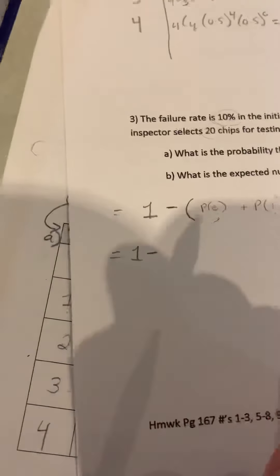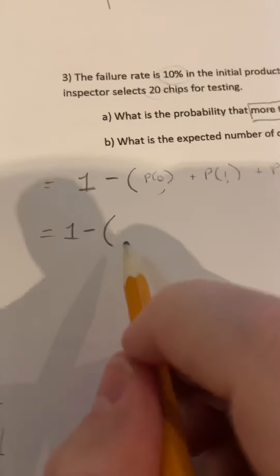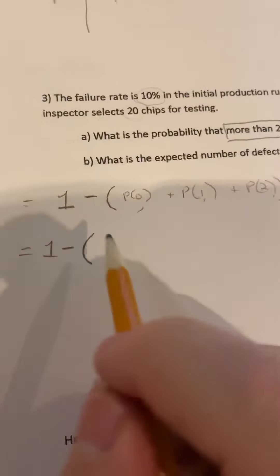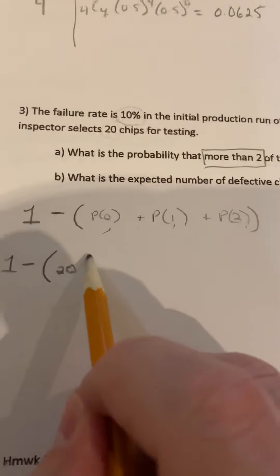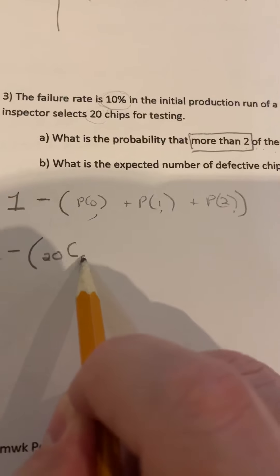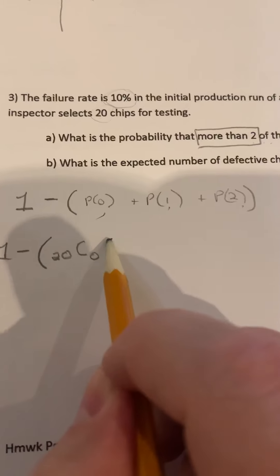So one minus, now we want to do the probability of having zero defective. So again, we have 20 chips, which is 20 trials. So in 20 trials, we want to choose zero defective chips. So we want to see the chance of not having any.